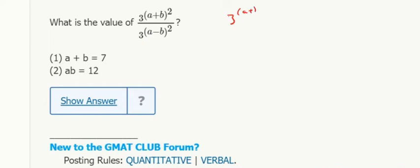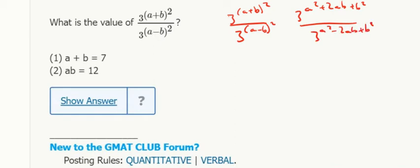It's 3 to the a plus b squared over 3 to the a minus b squared. So working on that stem more, that's 3 to the a squared plus 2ab plus b squared over 3 to the a squared minus 2ab plus b squared.